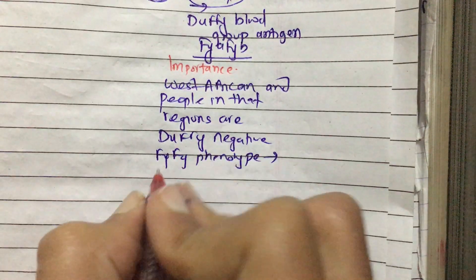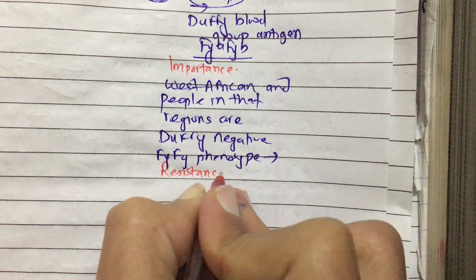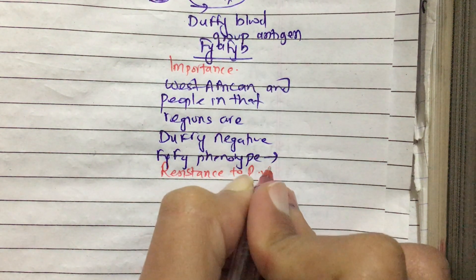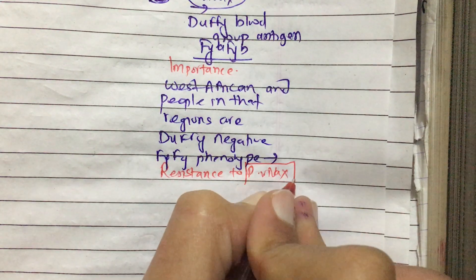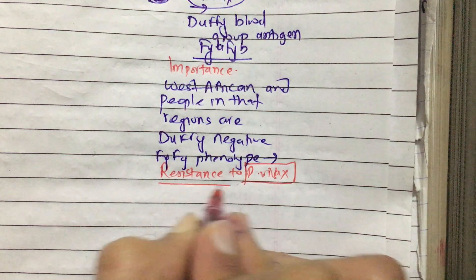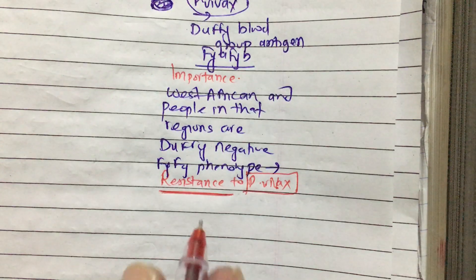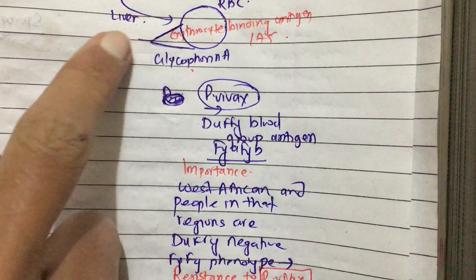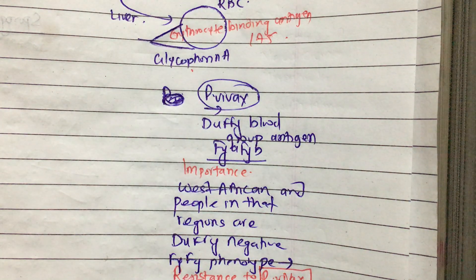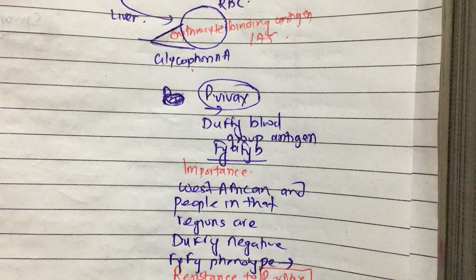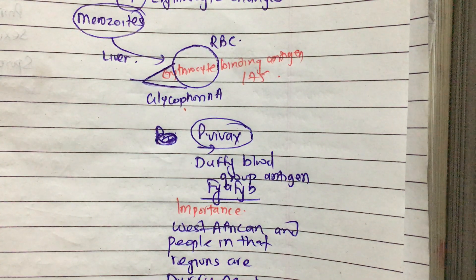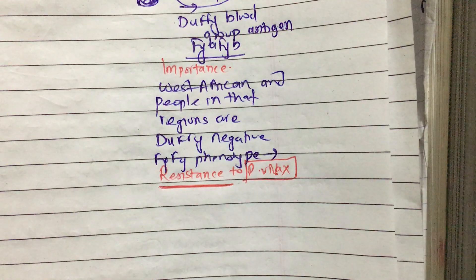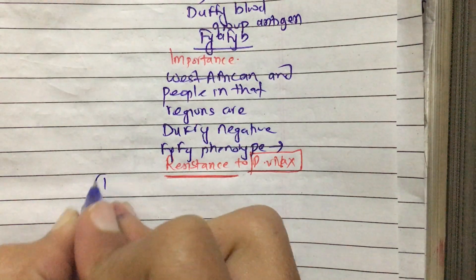Because West Africans are Duffy negative (FyFy phenotype), they are resistant to Plasmodium vivax. Resistance to Plasmodium vivax is conferred by Duffy blood group negativity. So the merozoites from the liver get attached to the RBC by erythrocyte binding antigen 175 or glycophorin A.